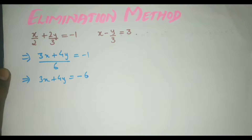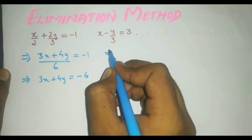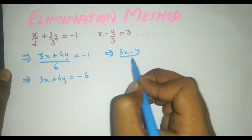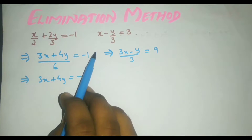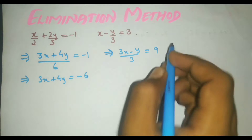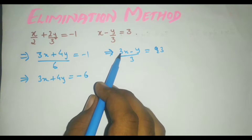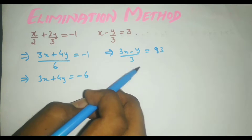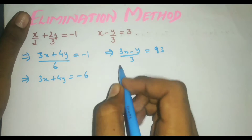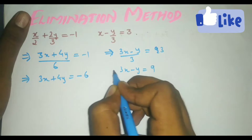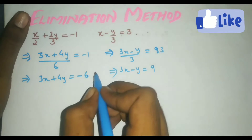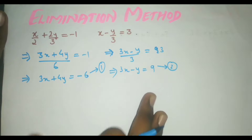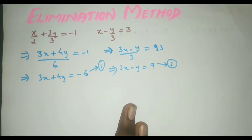Now taking the second equation, we get 3x minus y over 3 equal to 9. Taking the LCM and multiplying by 3 gives 3x minus y equal to 9. So this is the first equation and this is the second equation in standard form.